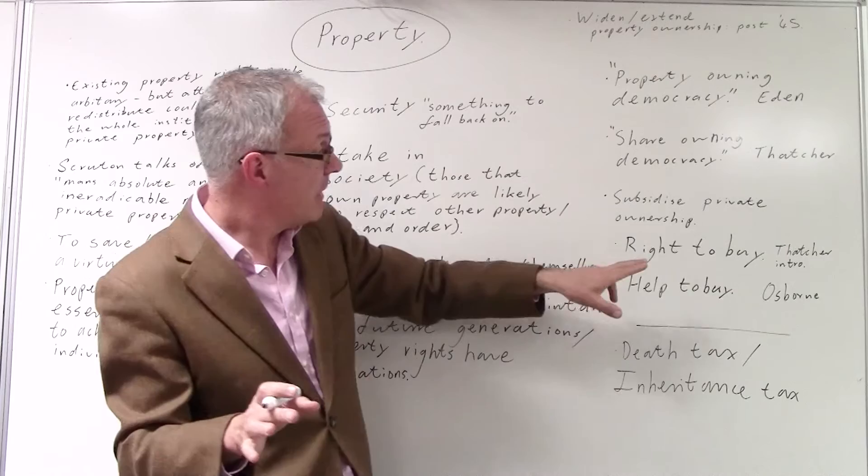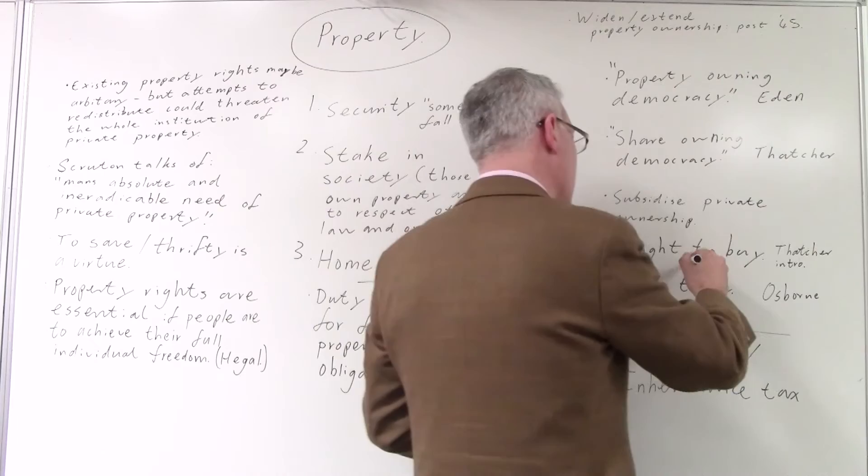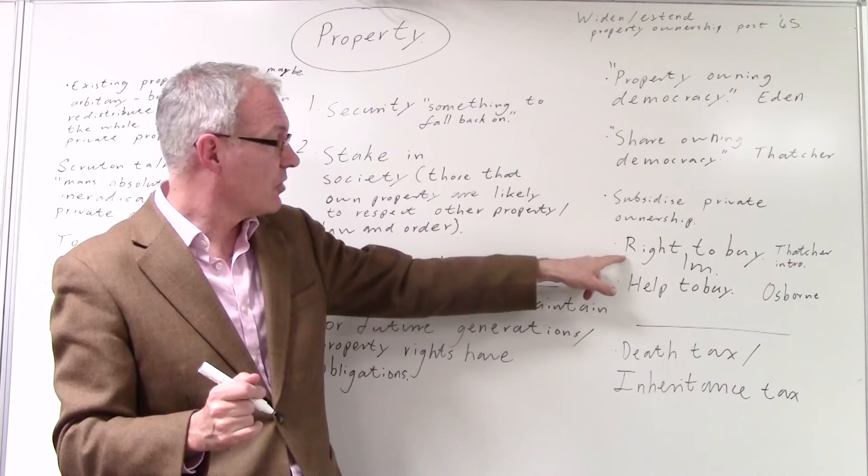So if you lived in a council house, you had the right to buy it. And one million were sold at pretty good prices to their owners. My friend Cathy, for example, got a pretty good bargain when she bought her council house in central London.